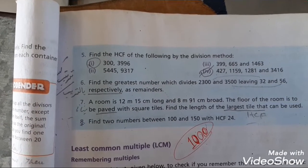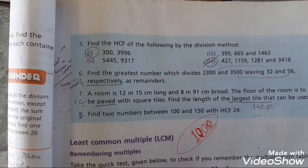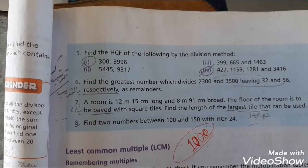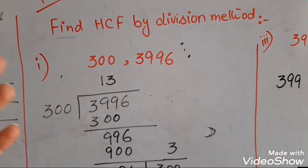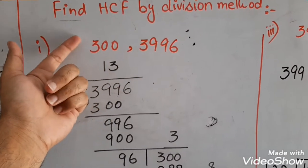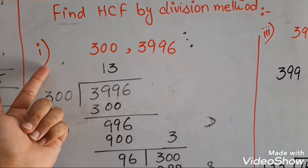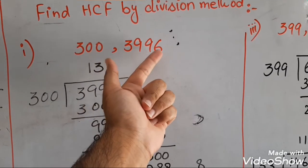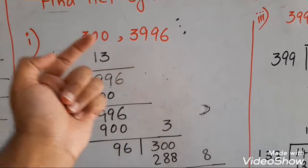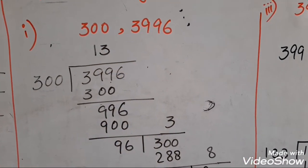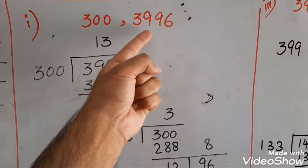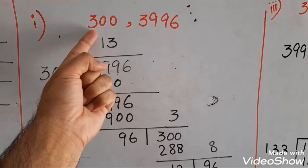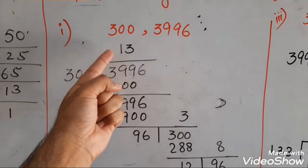Question 5: find the HCF of the following by the division method. Class, now we will find the HCF by the division method. The first part of this question is 300 and 3996 — these are 2 numbers. I will put the big value inside and divide with the small value, 300.